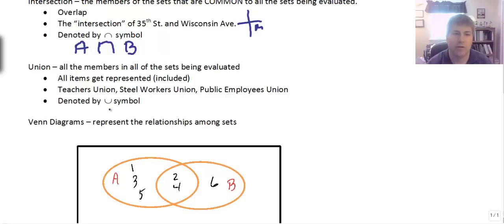So I remember this as the U is union and the upside down U is intersection. If you're a little bit creative, you can say that would kind of be an I for intersection.